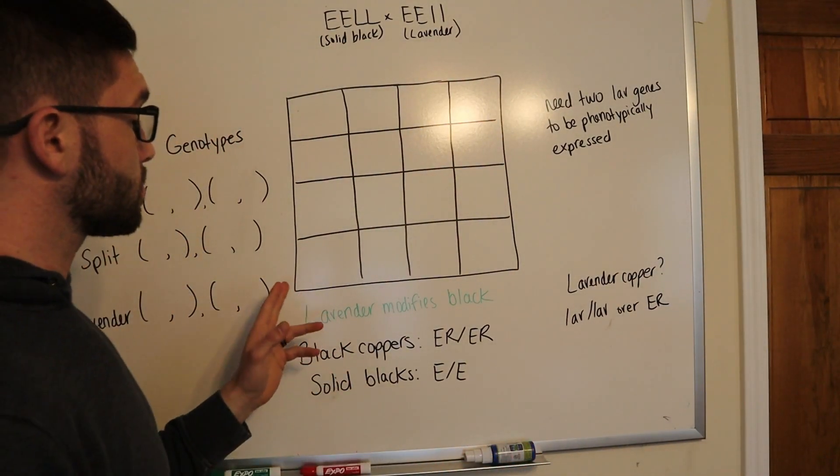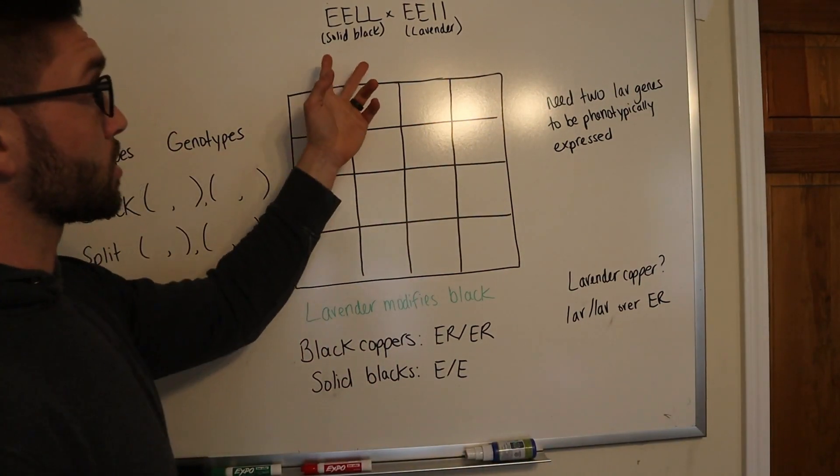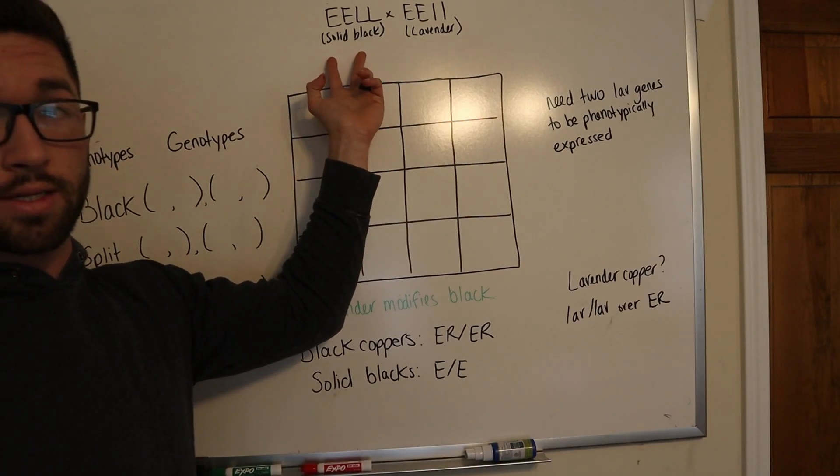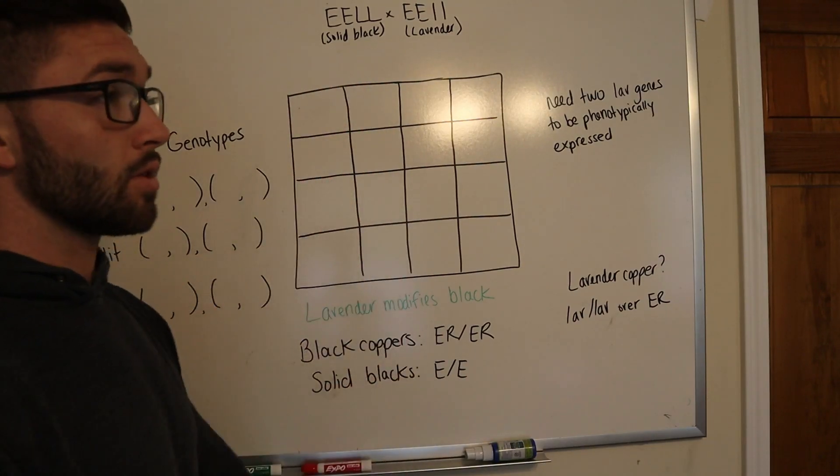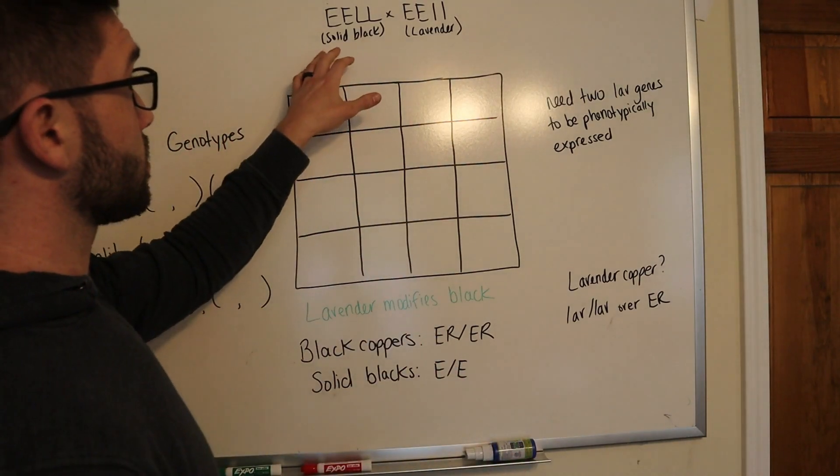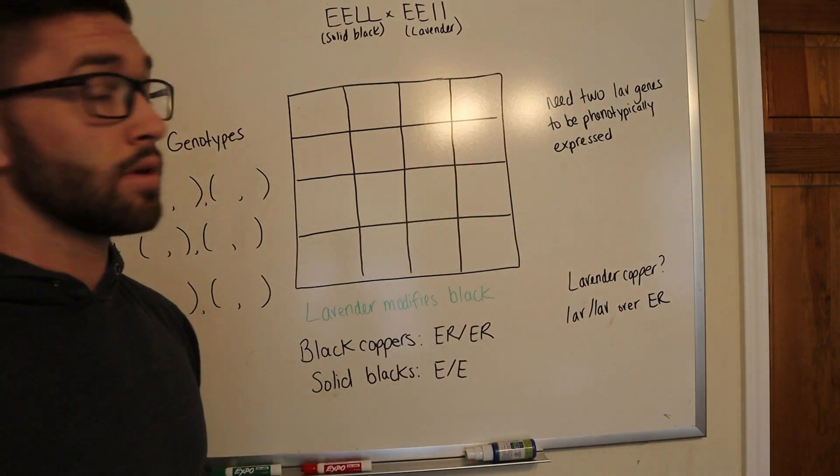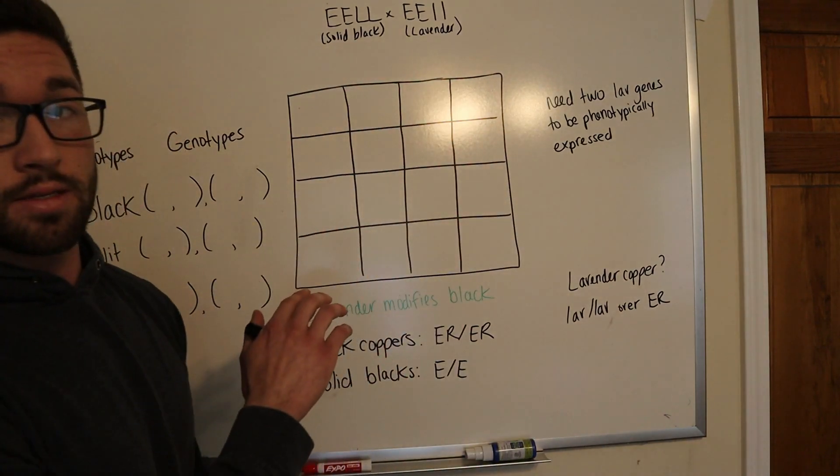So this Punnett Square is a little different than the last one. Besides having 12 more boxes, you actually have two genes that you're mixing now and not just one. So last time it was the brown egg gene and the blue egg gene. This time each bird actually contains the black and lavender alleles. So how you're going to mix this is a little different.